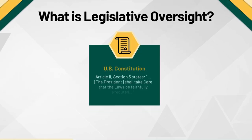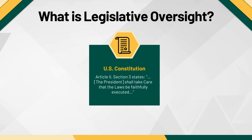The U.S. Constitution does not mention oversight. However, Article II imposes a duty on the President to faithfully execute the law. This implies a right in the lawmaking body — in this case, Congress — to conduct inquiries to ensure that this is happening. While we are discussing Presidents and Congress for the next few minutes, remember that these decisions at the federal level apply to state-level oversight as well.